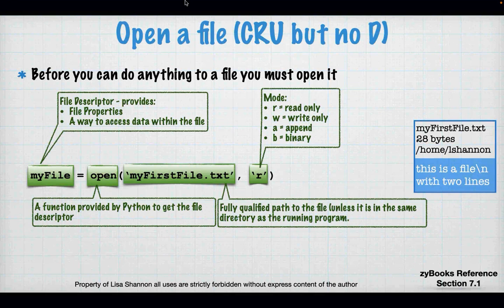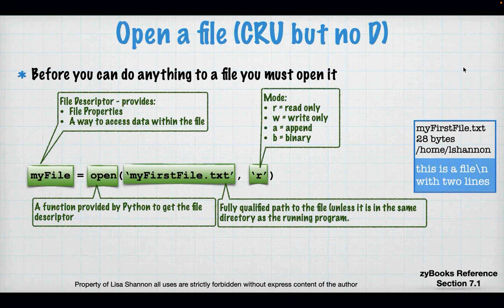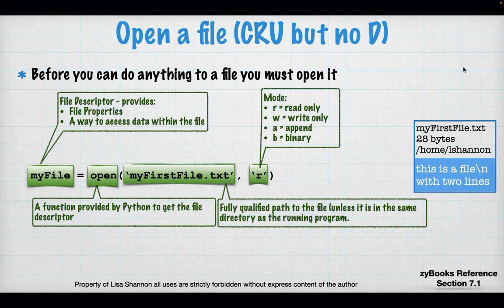On screen you can see: my_file = open('my_first_file.txt', 'r'). I'm opening that file for reading, meaning you can't change it, only read it. The blue box on the right side of the screen represents a file: the top portion is metadata about the file, and the solid blue area at the bottom is the contents — the stuff you actually want to get at.